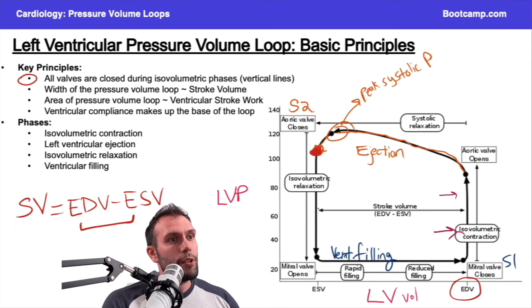So the idea here is that we have an end diastolic volume and an end systolic volume. The distance between these two volumes, that's going to make up the stroke volume. That's the amount of blood that was ejected during the ejection phase through the aorta. The width of the pressure volume loop will tell you the stroke volume.